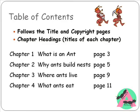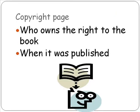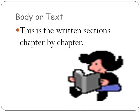The table of contents follows the title and copyright pages, and it has chapter headings — the titles for each chapter. The copyright page normally comes after the title page, and it states who owns the right to the book and when the book was published. The body or text part of the book is the written sections of the book, and it can be split chapter by chapter.